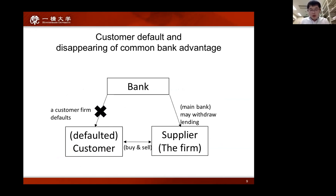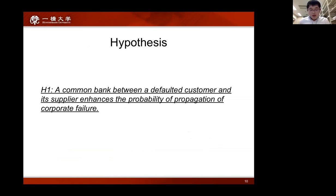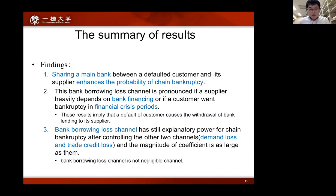Based on this hypothesis, we test whether the probability of a supplier's chain bankruptcy increases when the bankrupt customer shares the same main bank with the supplier. Our first main finding is that sharing the main bank between the defaulted customer and its supplier enhances the probability of chain bankruptcy.